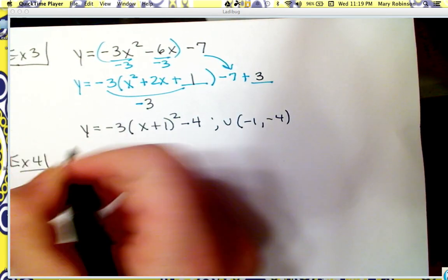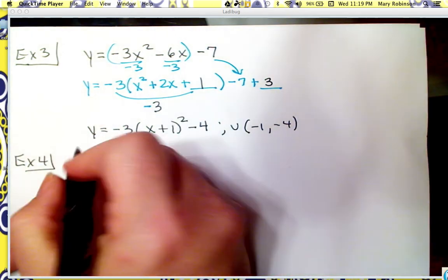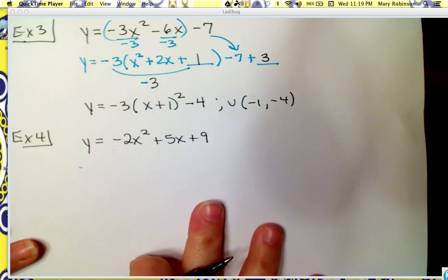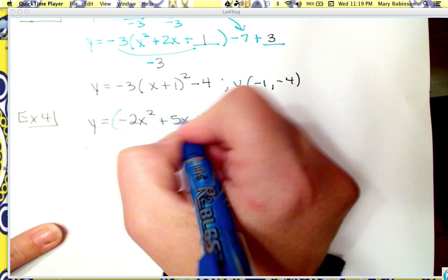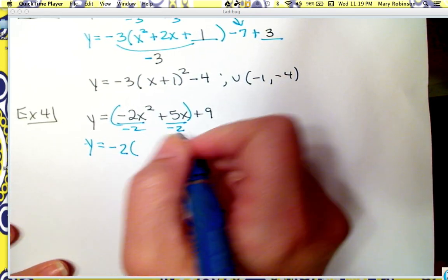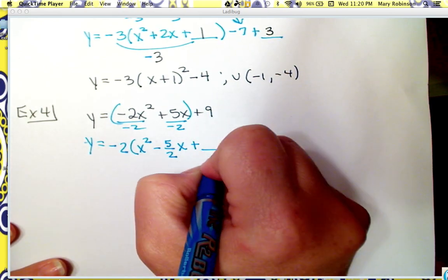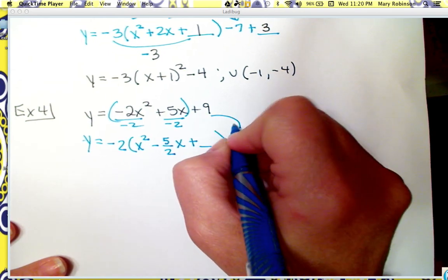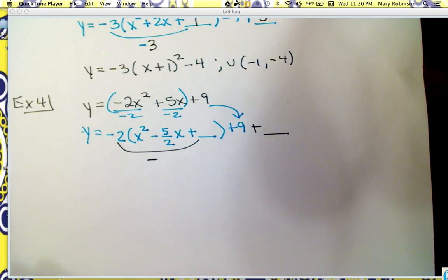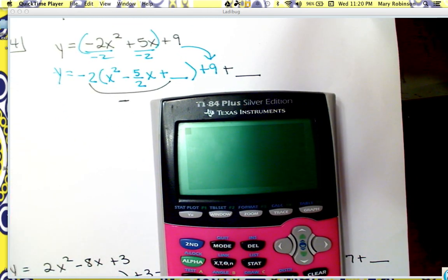The last example covers what happens when you have a negative leading coefficient and when you take half of b and square it, it's not a pretty integer. Our a value comes out, and when we simplify we get x squared, but now we've got negative 5 halves — that's not pretty. We always add the number on the inside when we complete the square, and bring down this constant. Because the a value is negative, we add our number at the back end.